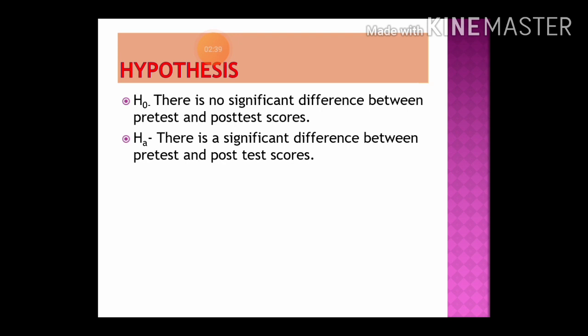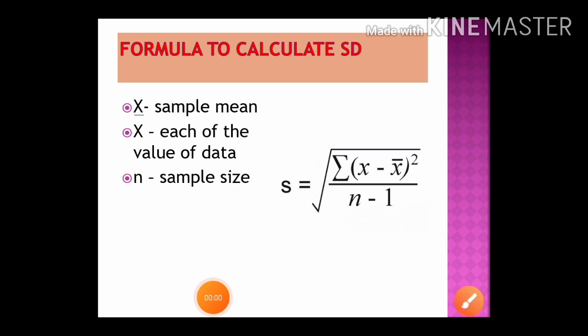Before proceeding, let us formulate the hypotheses. The null hypothesis is: there is no significant difference between the pre-test and post-test scores — the difference is zero. The alternative hypothesis is: there is a significant difference between the pre-test and post-test scores — the difference is not equal to zero.